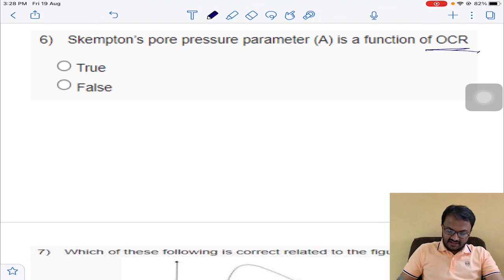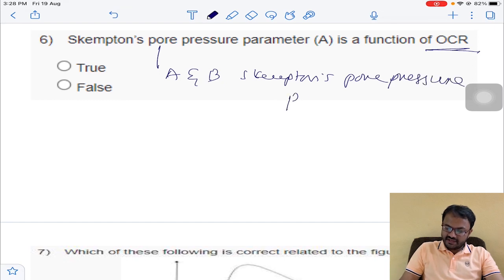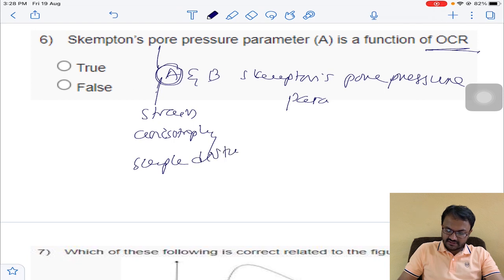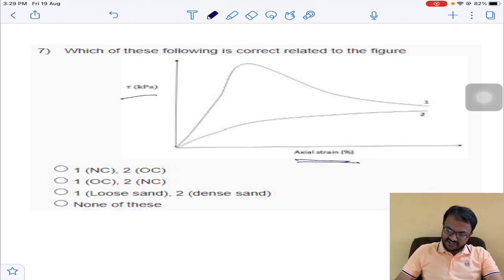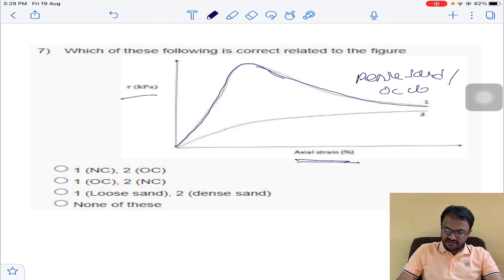There are two parameters, A and B. These are called Skene's parameters. Generally he asked about A. A will depend upon strain, anisotropy, sample disturbance, and over consolidation ratio. So it is a true statement. Next there is one more graph, that is tau and axial strain. This first curve is having perfect peak, that is it is related to dense sand or over consolidated clay. This is related to loose sand or normally consolidated clay. This is OC and NC, option B for question number 7.